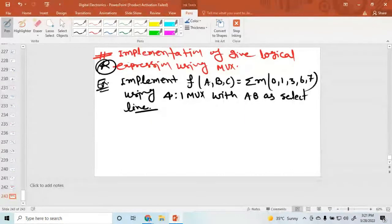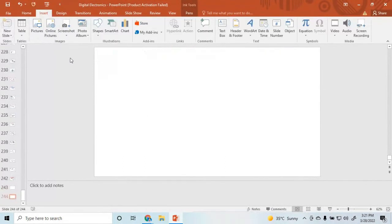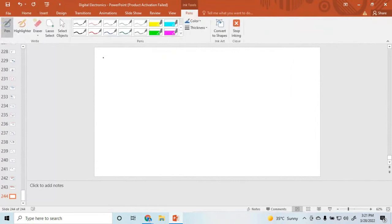First, how many variables here? Three variables. So I am taking a 3-variable number in the next slide. Just now I am taking a truth table for 3 variables: a, b, and c. This is a 3-variable number.